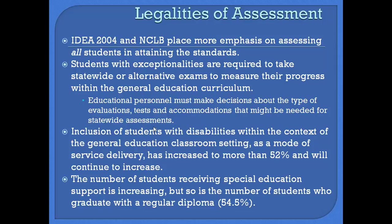Inclusion students very rarely take the alternative route. The most alternative you're going to find is maybe a one-on-one test — they're given the test that everybody else takes, but just in a small group or one-on-one. The general education classroom setting has increased to more than 52%, and this is going to continue to increase. I think 52% is probably a rather low estimate of how many students with special needs are in inclusion classes.